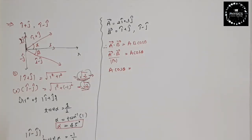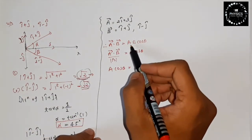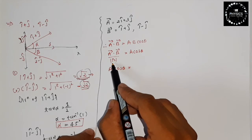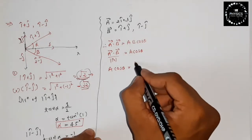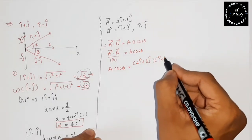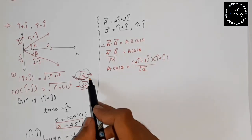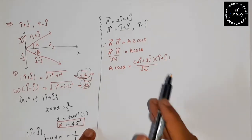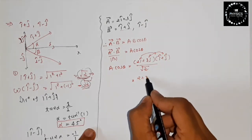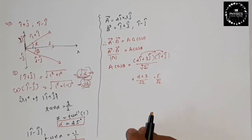So a·cos(θ) = (vector a · vector b) / |vector b|. Here a = 2i-cap + 3j-cap, and b = (i+j). The magnitude of b is √2, which we already defined. Multiplying i with i gives 2, and j with j gives 3, so the result is 5/√2 for the scalar component.